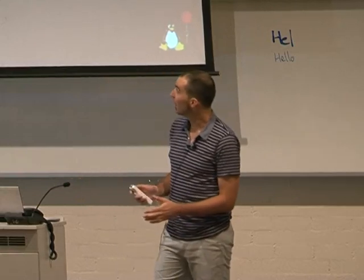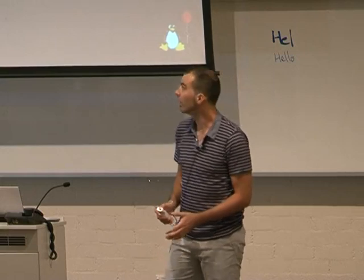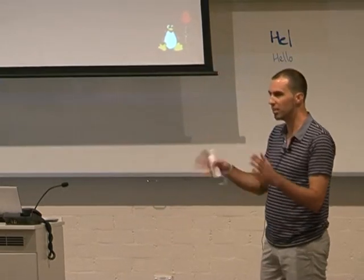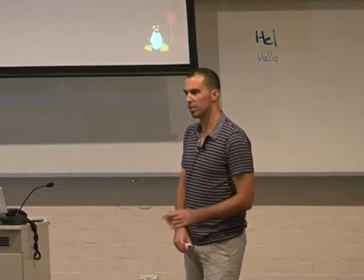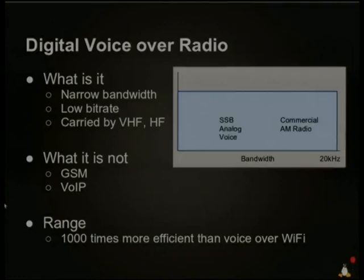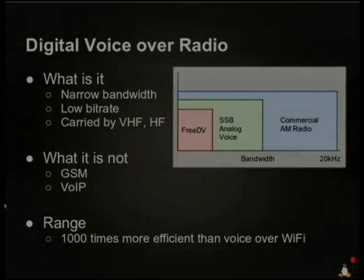Here's the bandwidth comparison. Your commercial AM radio uses somewhere between 10 and 20 kilohertz. Amateur radio operators use single sideband analog voice, which is about half the AM radio bandwidth. The exciting part is where FreeDV fits in — it's a third of the SSB analog voice bandwidth. That means you can fit two or three FreeDV channels where you'd otherwise just have a single SSB analog voice channel.